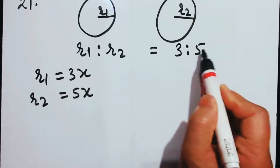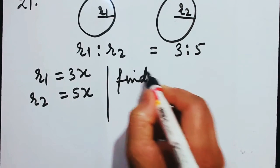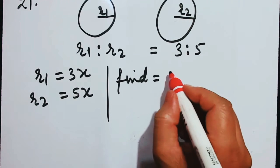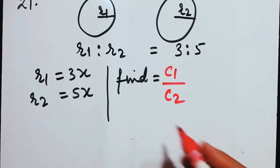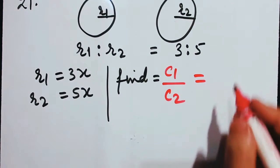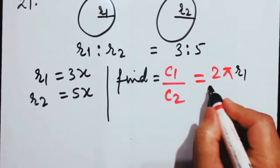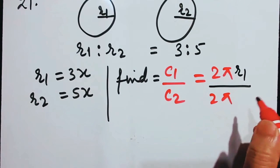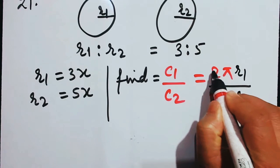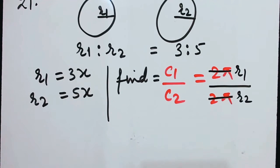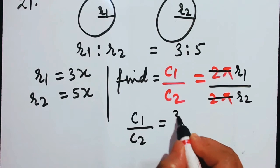Find the ratio between the circumferences, that is C1 by C2. Putting into the formula: C1/C2 equals 2πR1 divided by 2πR2. The 2π cancels, so C1/C2 equals 3x by 5x.